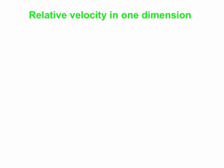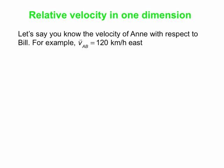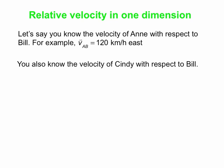Relative velocity in one dimension. Here's a typical example. You know the velocity of Ann with respect to Bill — VAB, velocity of A (Ann) with respect to B (Bill). Ann is traveling at 120 kilometers per hour east; she might be driving along the Mass Pike, and Bill is standing nearby watching the cars go by. You also know the velocity of Cindy with respect to Bill: 110 kilometers per hour east. So Cindy is probably in a different car on the Mass Pike, traveling the same direction as Ann, just not quite as fast.